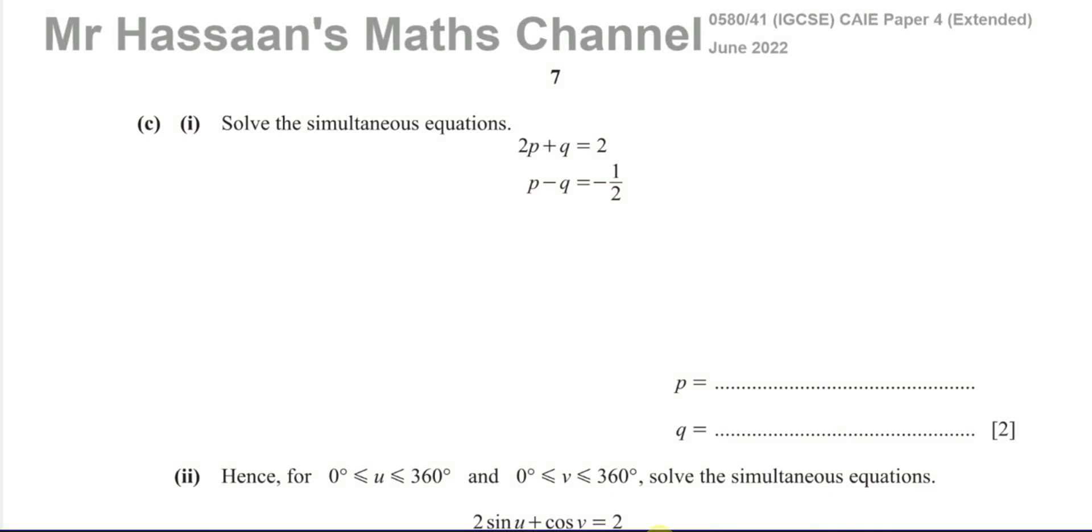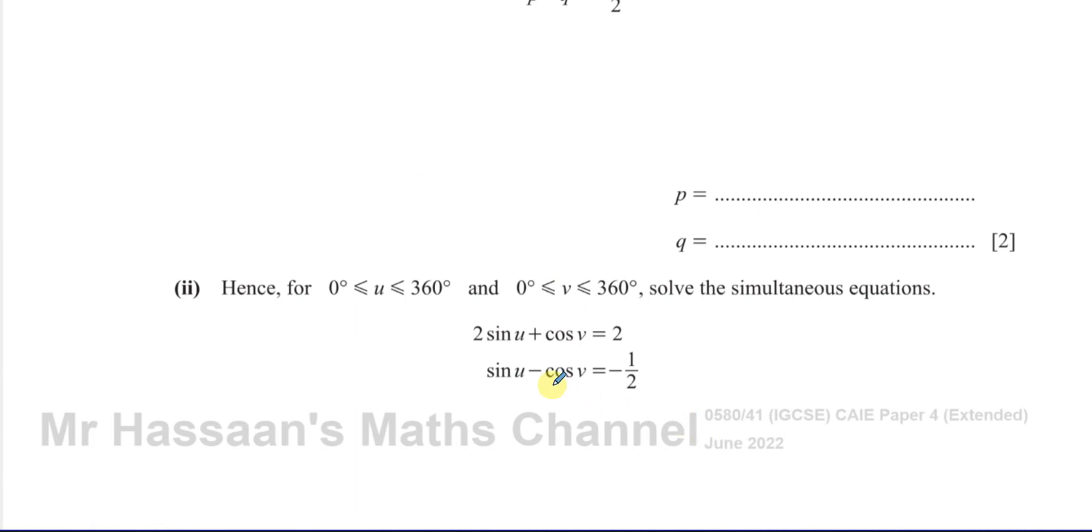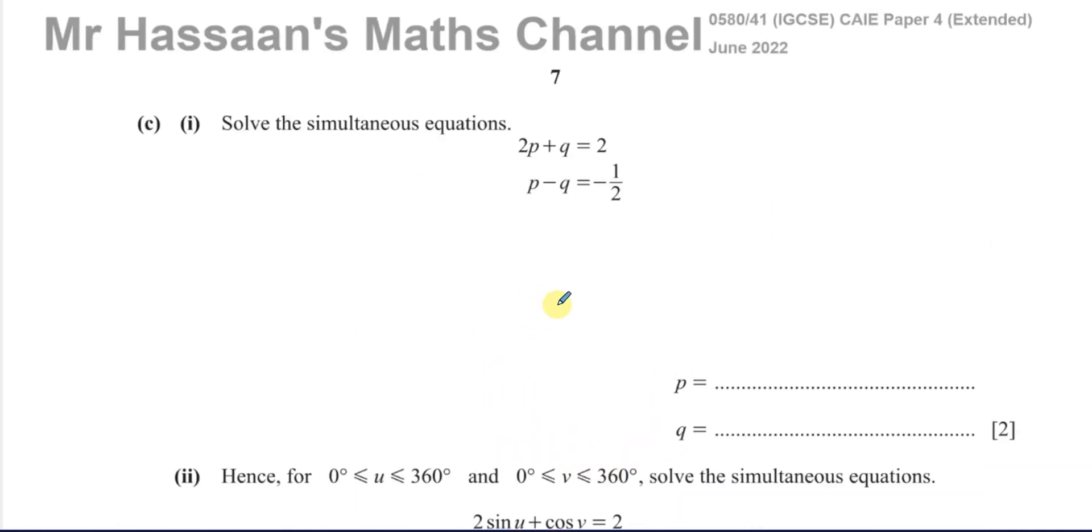Welcome back, this is Mr. Hassan's Math Channel. I'm now answering question 3 part C from the June 2022 Cambridge 0580 IGCSE paper 4 variant 1. This question starts off about simultaneous equations but ends up being about trig equations, so I'm saving this under the playlist of solving trig equations.